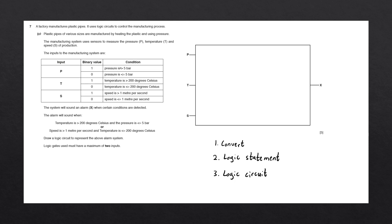For example, when the pressure is greater than 5 bar, it's going to set the binary value of P to be 1. You can think of this as an input to our logic statement, where the input can either be 1 or 0. The English statement we have is comprised of these conditions, so all we need to do is write this English statement in terms of these inputs using P, T, and S.